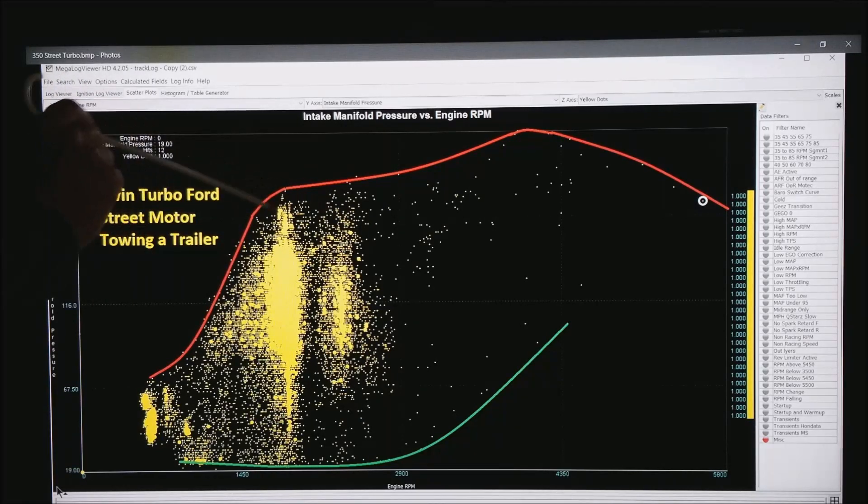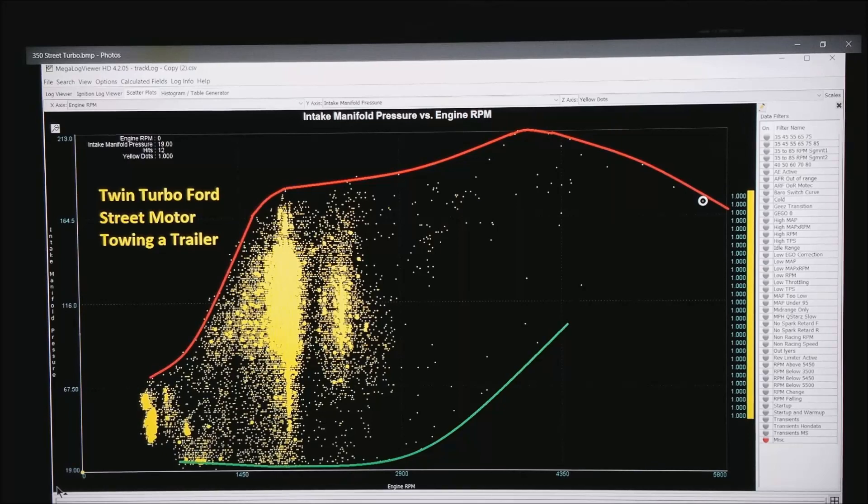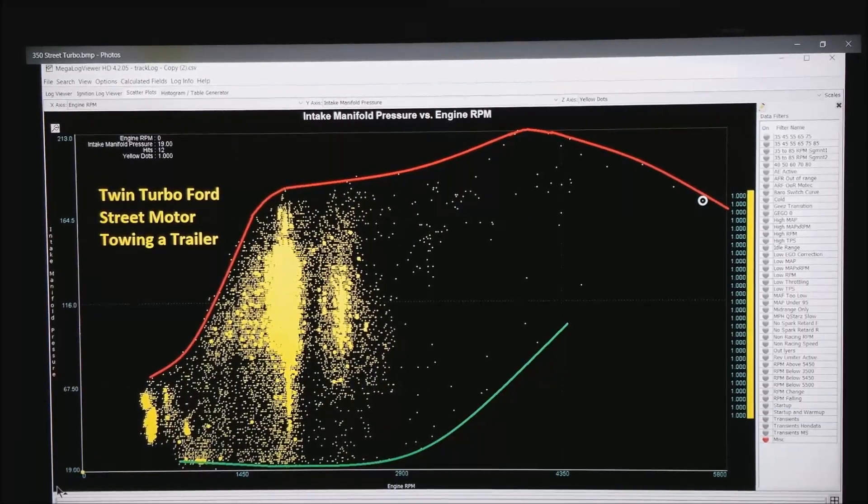You would want to have lots of tuning cells in this area where this is cruise with the torque converter locked up and if you give it a little throttle it pops to right there one gear down so that's where you'd want to have lots of tuning cells on a motor like that.